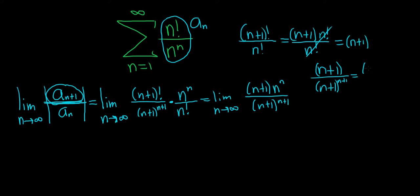So check this out. This is n plus 1. And then this is n plus 1 to the n times n plus 1 to the 1, right? Because when you multiply these, you actually add the exponents. This is really nice. This is 1 over n plus 1 to the n.